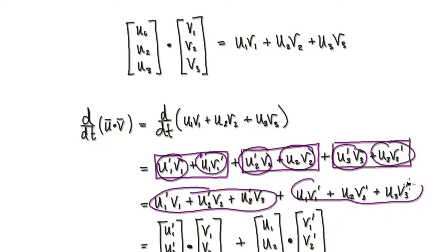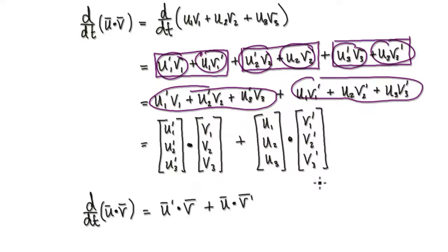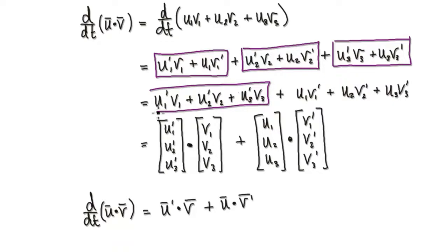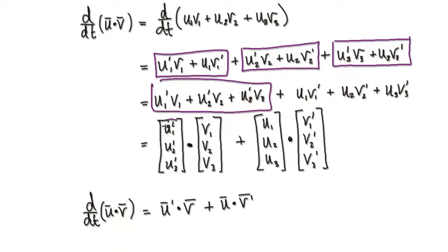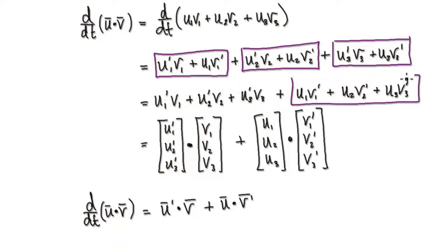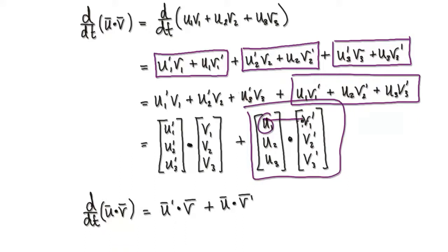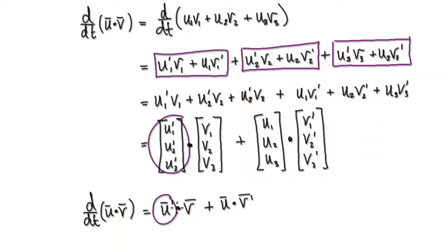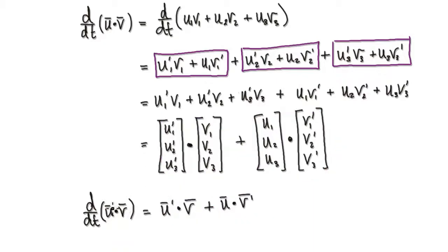Group all these together, and that gives you these three terms here. Now, you can rewrite this expression here because, looking at the dot product of two vectors — this times this gives you this, plus this times this gives you this, plus this times this gives you this — and those three terms can be written as the dot product of these two vectors. So this whole thing boils down to U-prime dot V plus U dot V-prime. That's what differentiating the dot product really means.